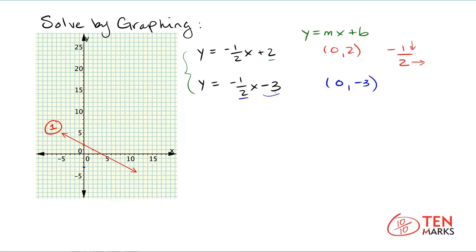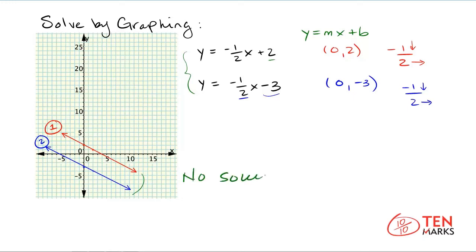Looking at the slope again, you have a slope of negative one-half, which means you go down one and to the right two from your y-intercept to get the second point. I'm going to connect these two points with a line as well. Comparing the two lines, they are parallel and will never intersect, which means there is no solution. No intersection means no solution.